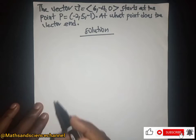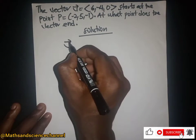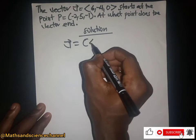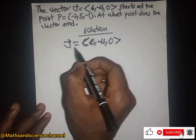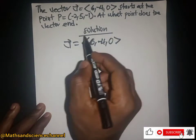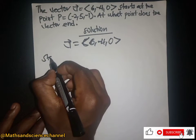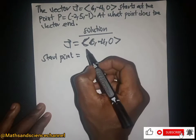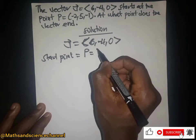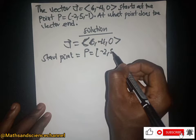We are given the general vector here as 6i - 4j + 0k. Now we are also giving the starting point of the vector, right? So let's write the start point. The start point here is P, given by P = (-2, 5, -1).